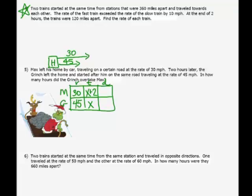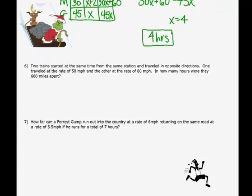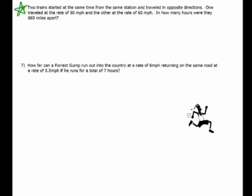Max's distance is going to be 30x plus 60 and the Grinch's is just 45x. And I want to know when their distance is the same in this case. So as you can see, these problems are set up a little differently depending on what you're doing. If you solve that, you get x equals 4. And that means after 4 hours, the Grinch will finally be able to pass up Max. Number 6 is kind of like number 1 and 2, so I'm going to let you guys work on that one.